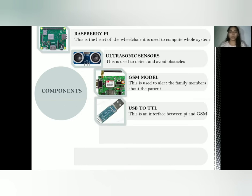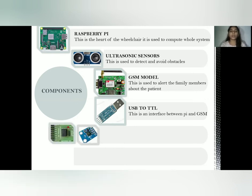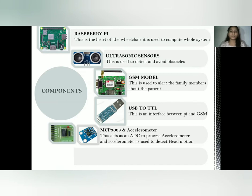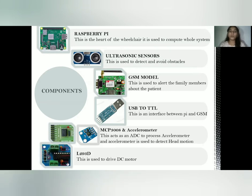Next is the USB to TTL module, used as an interface between the GSM and the Raspberry Pi. Next is the accelerometer ADXL337 and the MCP3008. The accelerometer ADXL337 is a major component to detect head gesture; it is a three-axis sensor used to detect the tilt gesture of the head. The tilt gesture generates an analog signal which cannot be processed by the Raspberry Pi directly, so MCP3008 is used as an ADC — analog to digital converter. The L293D motor driver is used to drive the two DC motors.